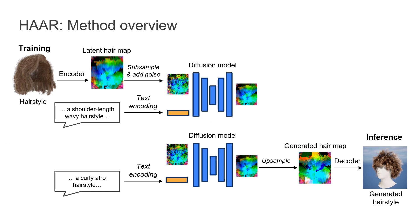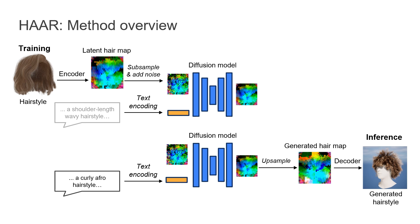We employ a text-conditioned diffusion model to generate hairstyles in a pre-trained space of latent hair maps. These maps are produced from strand-based hairstyles via a variational auto-encoder. To train a conditional diffusion model, we annotate a dataset of synthetic hair assets with textual descriptions and use them. However, this model learns to generate latent maps only for the few guiding strands in the hairstyle.